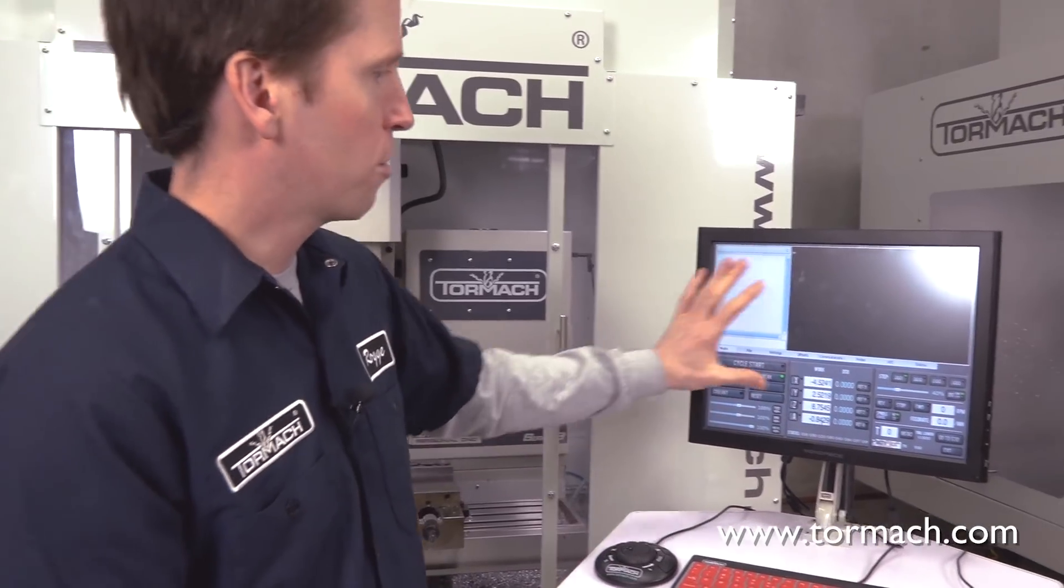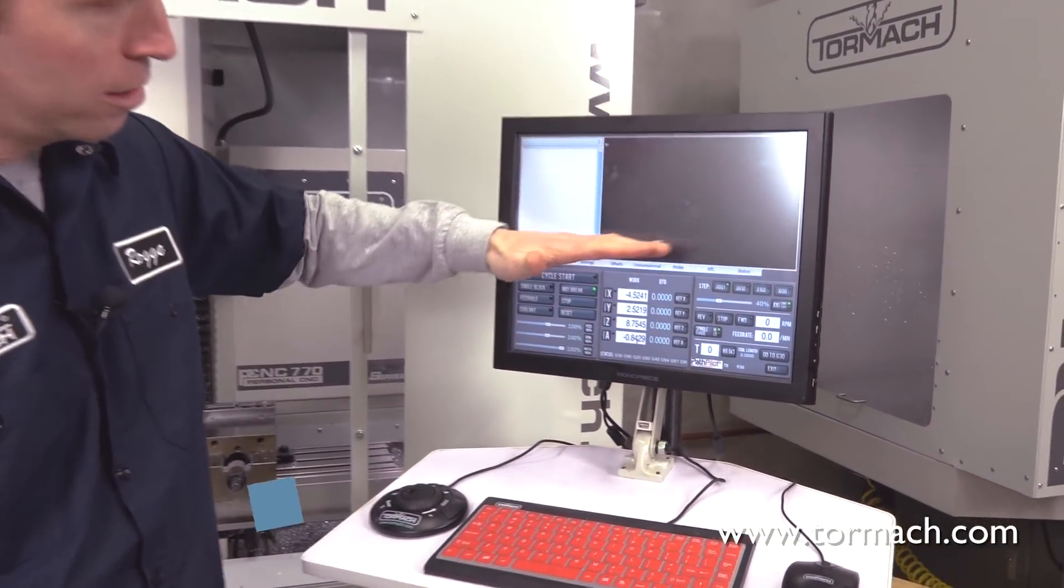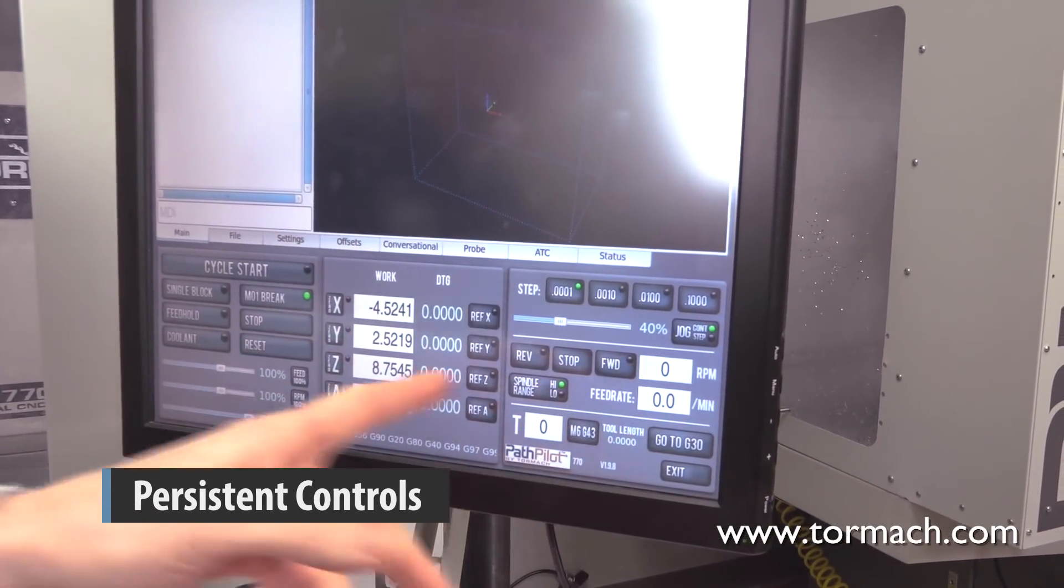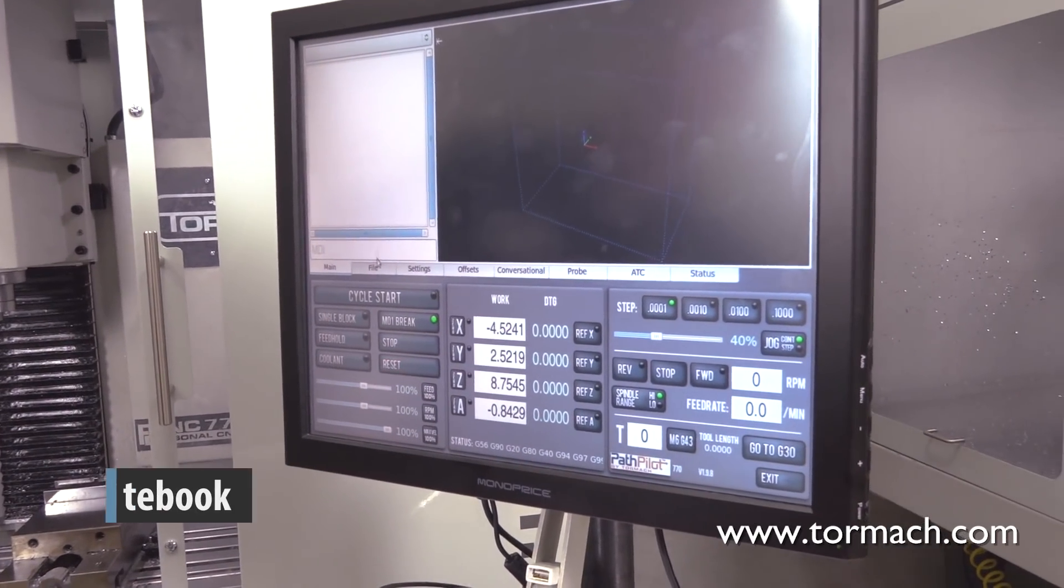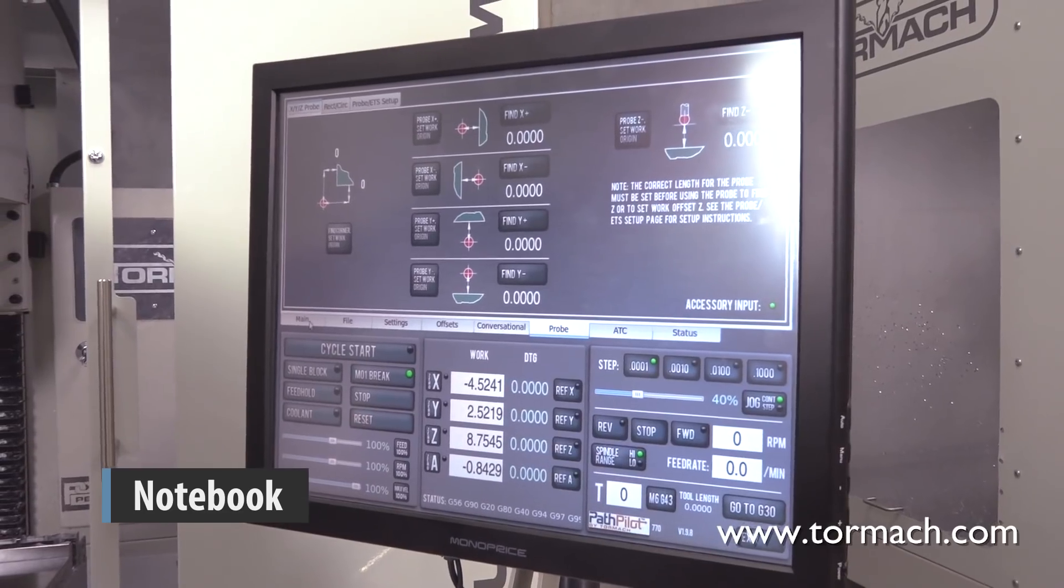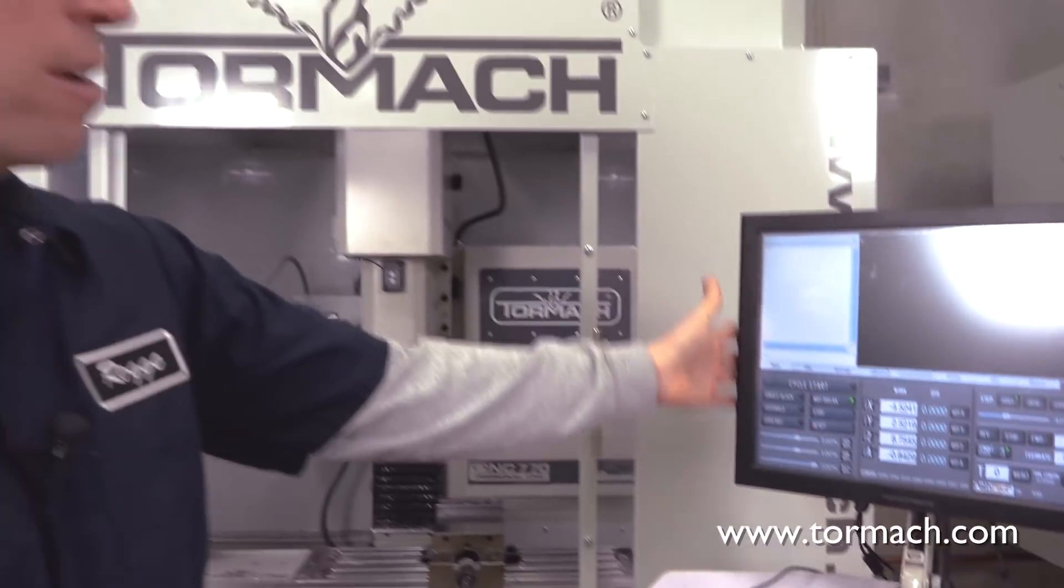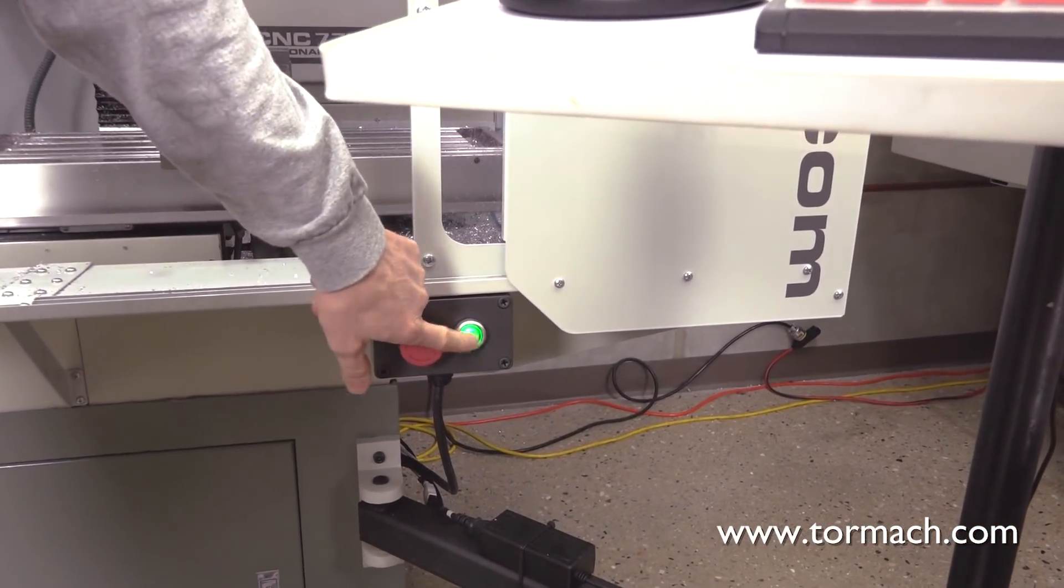A couple things to note real quick. The software is divided into kind of two main groups. This group down at the bottom, these are all persistent controls. They're going to stay there through the entirety of your session. Up at the top, we have a notebook with different tabs for different functions. We'll go through a few of those today in this video. First thing you want to do, now that we have the interface up, we'll bring the machine out of e-stop and power it on.